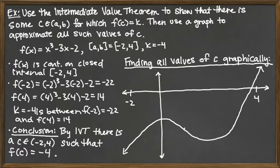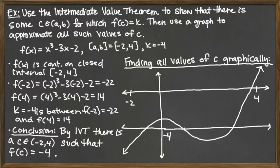The Intermediate Value Theorem only guarantees that there is one such C value, but we could have more than one, and we don't know specifically where that C value is without further analysis. That's where the graphical approach comes in. Looking at the graph, negative 4 is our K value on the y-axis, and the horizontal line y = negative 4 intersects our cubic function at three points between x = negative 2 and x = 4.